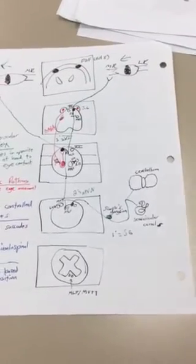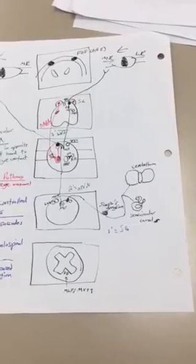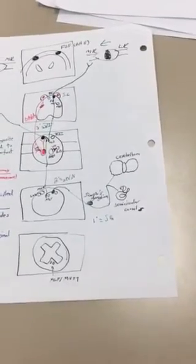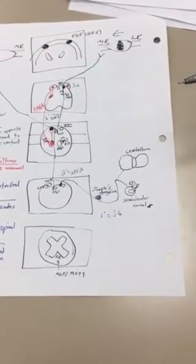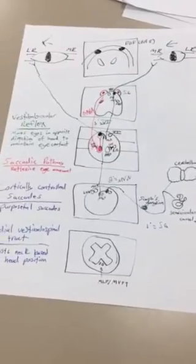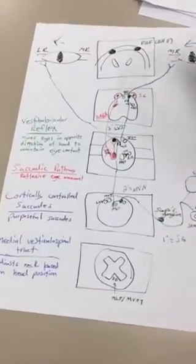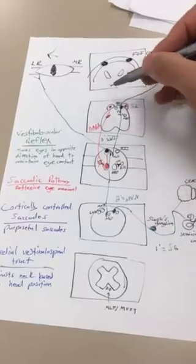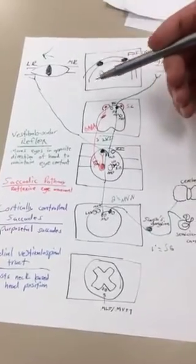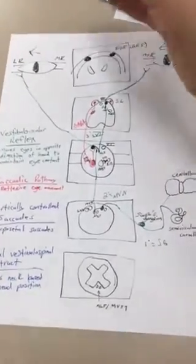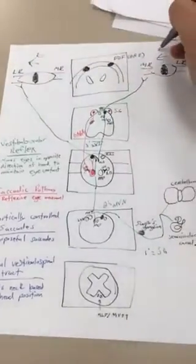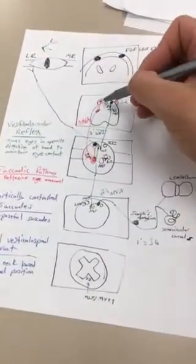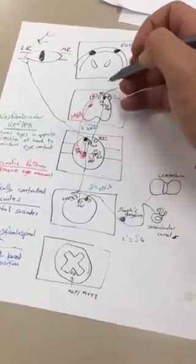So the next things we're going to focus on is our saccadic and our cortically controlled saccade pathways. I drew the saccadic pathway in, but we can still talk through it. Remember, this has to do with reflexive eye movement. So depending on which way your eyes want to move, if your eyes are going to move to the right, then we are going to have an ipsilateral superior colliculus will activate.